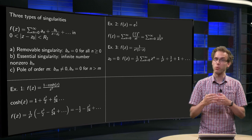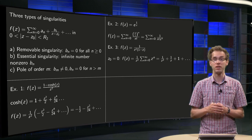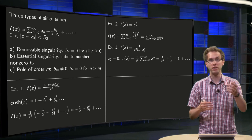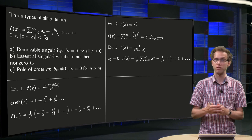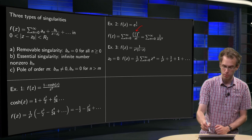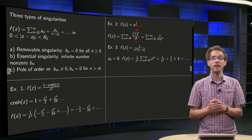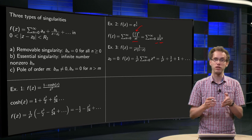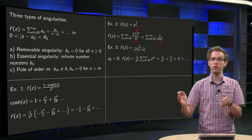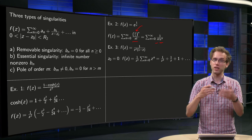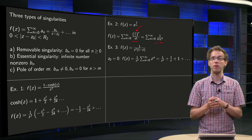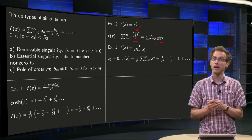Next example: e^(1/z). When we form the Laurent series using the known series e^z = Σ zⁿ/n!, we plug in 1/z to get Σ 1/(n! · zⁿ). This gives: 1 + 1/(1! · z) + 1/(2! · z²) + 1/(3! · z³) + … There are an infinite number of negative powers, so z = 0 is an essential singularity.